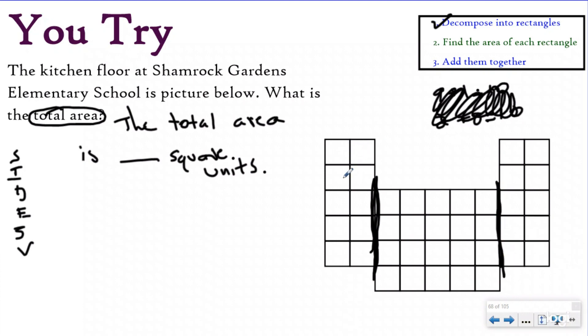So my area for this one is 2, 4, 6, 8, 10 square units. Then I have 1, 2, 3, 4, 5, 10, 15, 20 square units here and another 10 over here. So now I found the area of each of my separate rectangles. I'm going to add them together and I'm going to get the total area to be 40 square units.